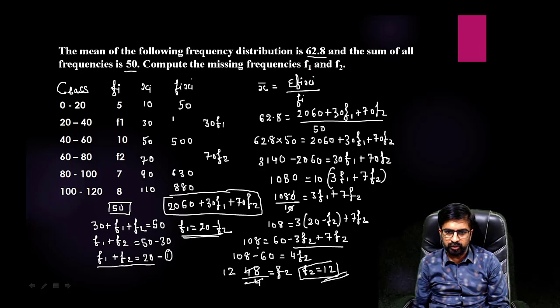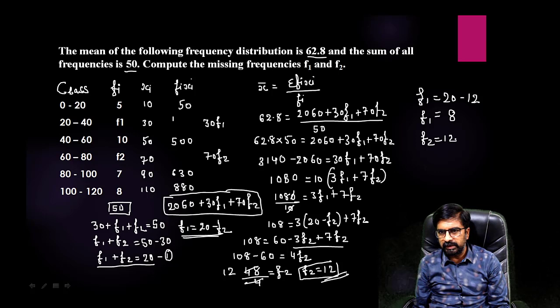Now just you need to put this f2 equals to 12. F1 is equals to 20 minus f2, that is 12. 20 minus 12 is 8. F1 is 8, f2 is 12.